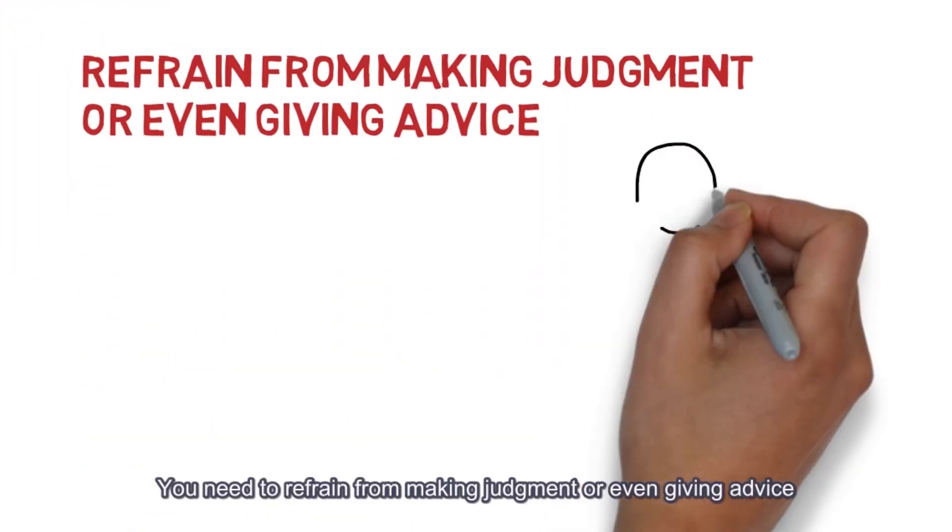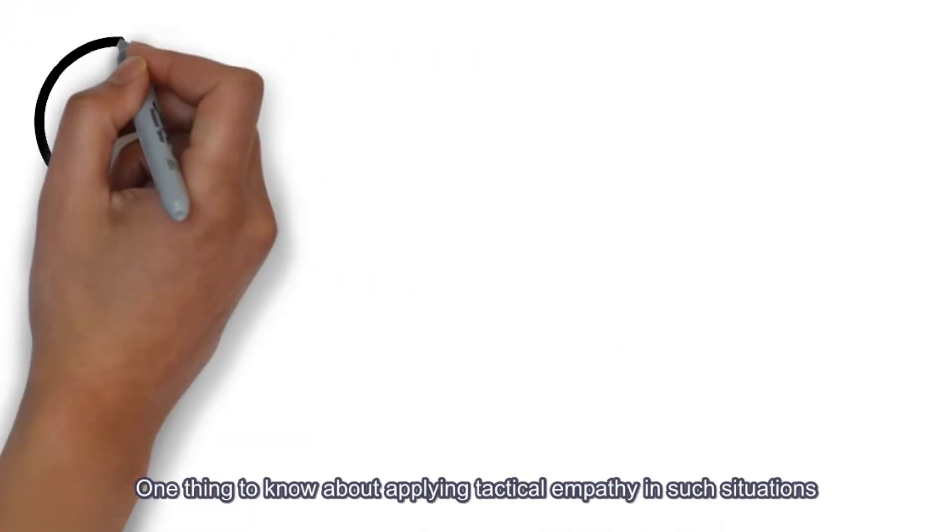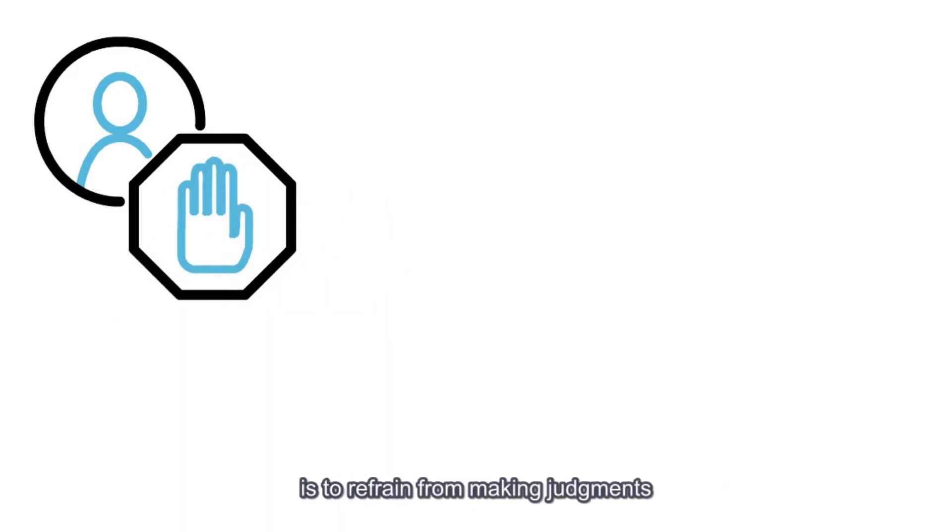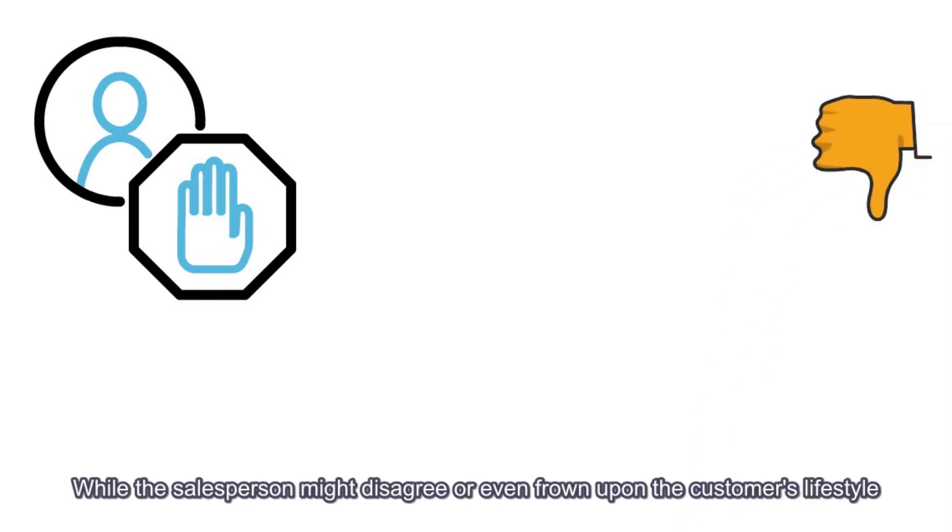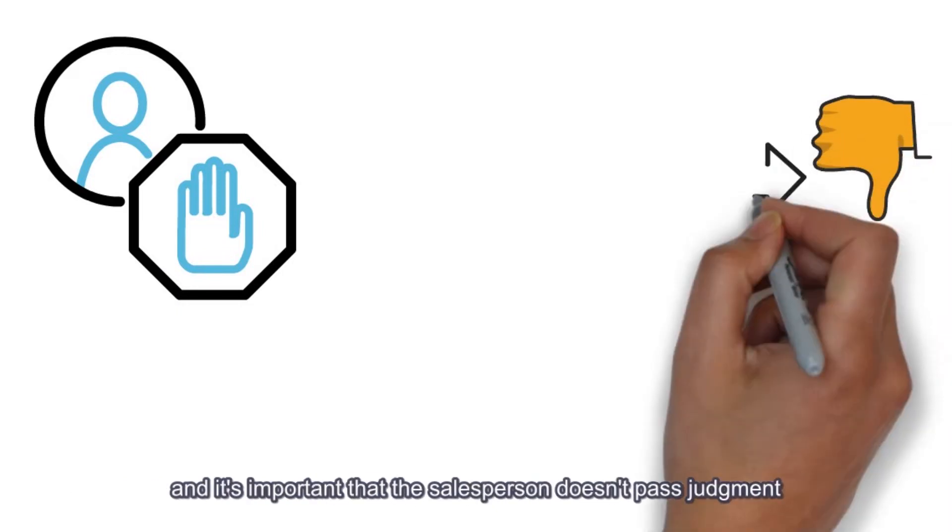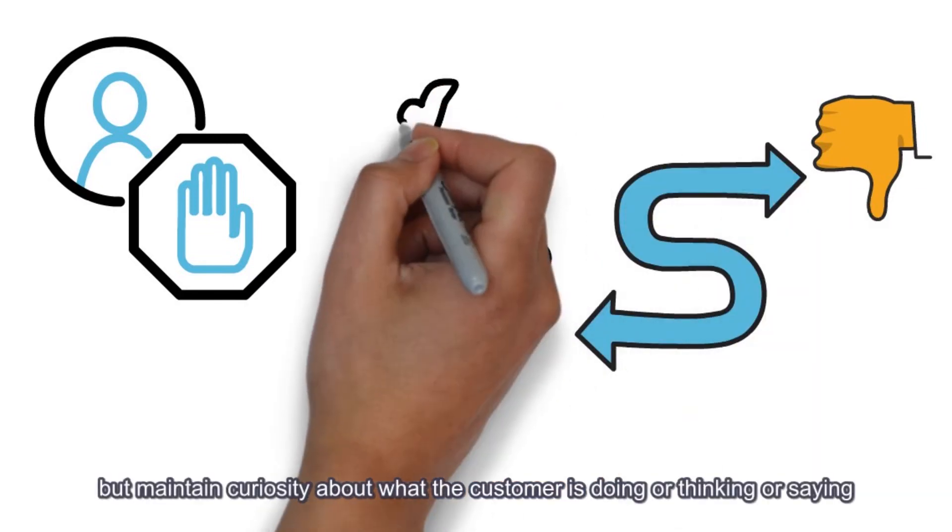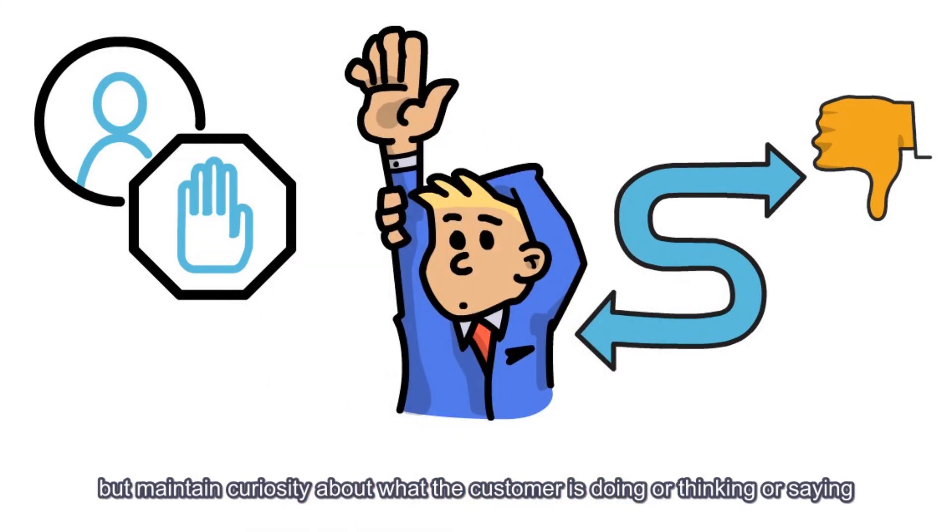You need to refrain from making judgment or even giving advice. One thing to note about applying tactical empathy in such situations is to refrain from making judgments while the salesperson might disagree or even frown upon the customer's lifestyle. It is important that the salesperson don't pass judgment, but maintain curiosity about what the customer is doing or thinking or saying.